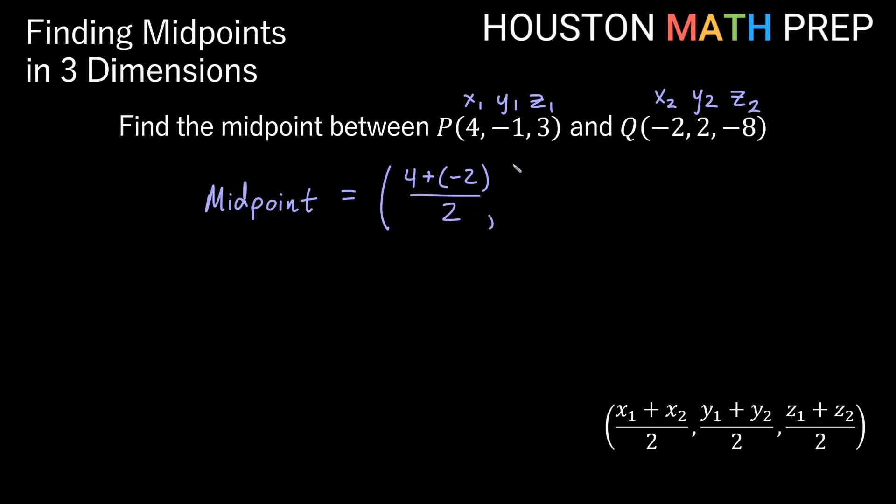Our y coordinate for the midpoint will be y1 plus y2 over 2, so that'll be negative 1 plus 2 over 2. And then our z coordinate will be z1 plus z2 divided by 2, which is 3 plus negative 8 here over 2.